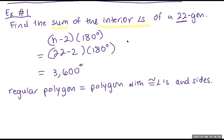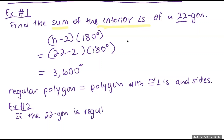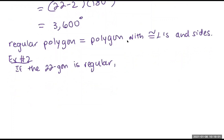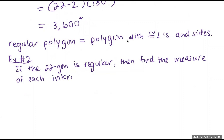Why that's significant is that when we talk about interior angles, there is no requirement for the polygon to be regular to use this formula. It could be any polygon that has 22 sides — all 22 sides can be different, but the angles inside have to add up to 3,600. Now, if we go further, for example number two: if the 22-gon is regular, that is the only time we're able to answer a question like this — find the measure of each interior angle.